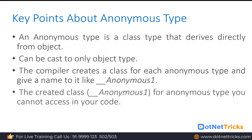This created '__AnonymousType1' class is under the control of the compiler, meaning we cannot access this internally created class. If you have more than one anonymous type, it will have '__AnonymousType2', '__AnonymousType3', and so on. Based on how many anonymous types you create, you will have the corresponding internally created classes. Internally, anonymous type is a class created by the C# compiler for us.